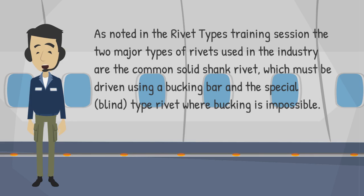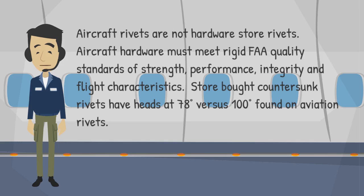As noted in the rivet types training session, the two major types of rivets used in the industry are the common solid shank rivet, which must be driven using a bucking bar, and the special blind type rivet where bucking is impossible. Aircraft rivets are not hardware store rivets. Aircraft hardware must meet rigid FAA quality standards of strength, performance, integrity and flight characteristics. Store-bought countersunk rivets have heads at 78 degrees versus 100 degrees found on aviation rivets.